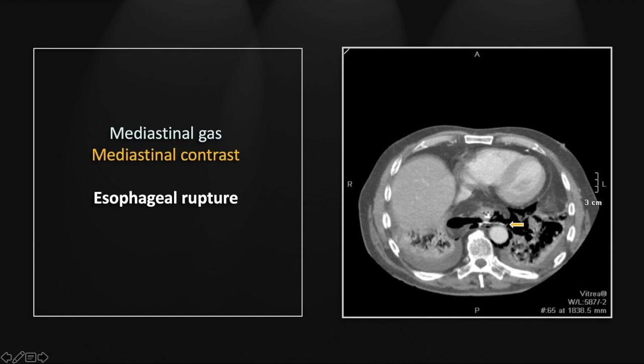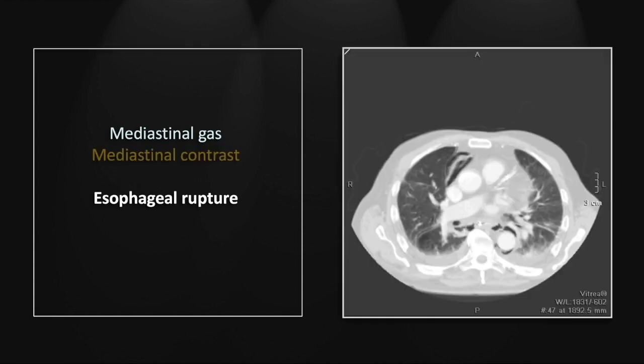It is worth noting that in these patients, the esophageal lacerations related to retching and vomiting will tend to have fairly extensive mediastinal gas, as you see in this case. In traumatic esophageal ruptures, the mediastinal soft tissues tend to knit together tightly and prevent the extensive pneumomediastinum that you see here.